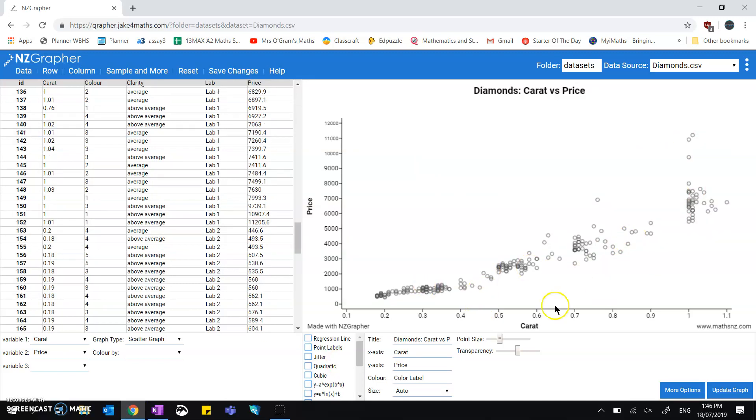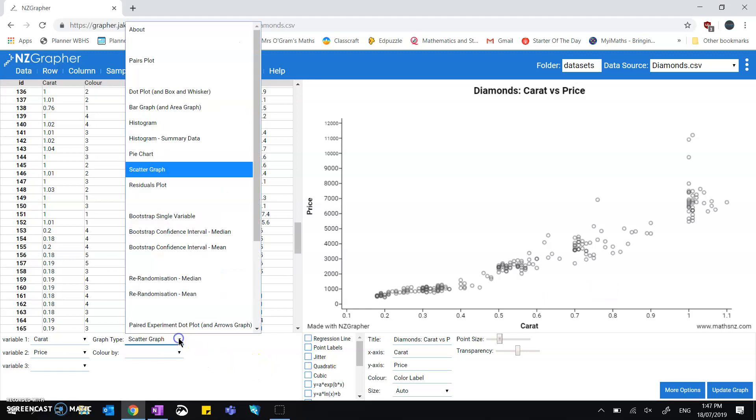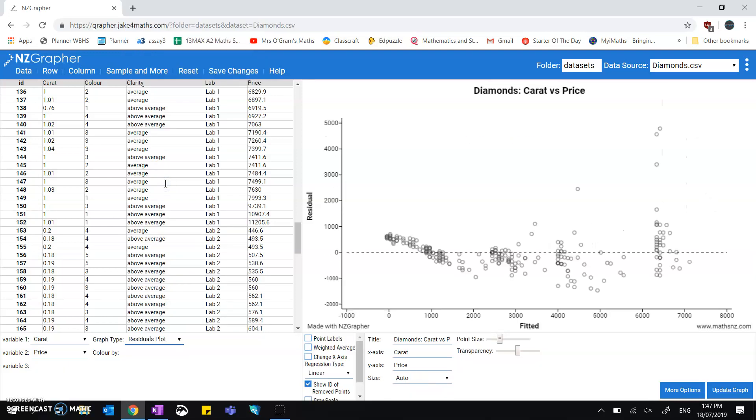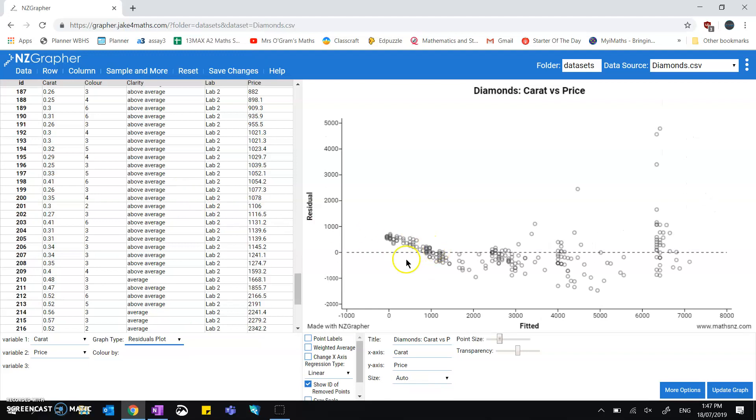Now you can do something called looking at the residuals of the model. So on your graph type options there, if you click on residuals plot, then we get the residuals graph.